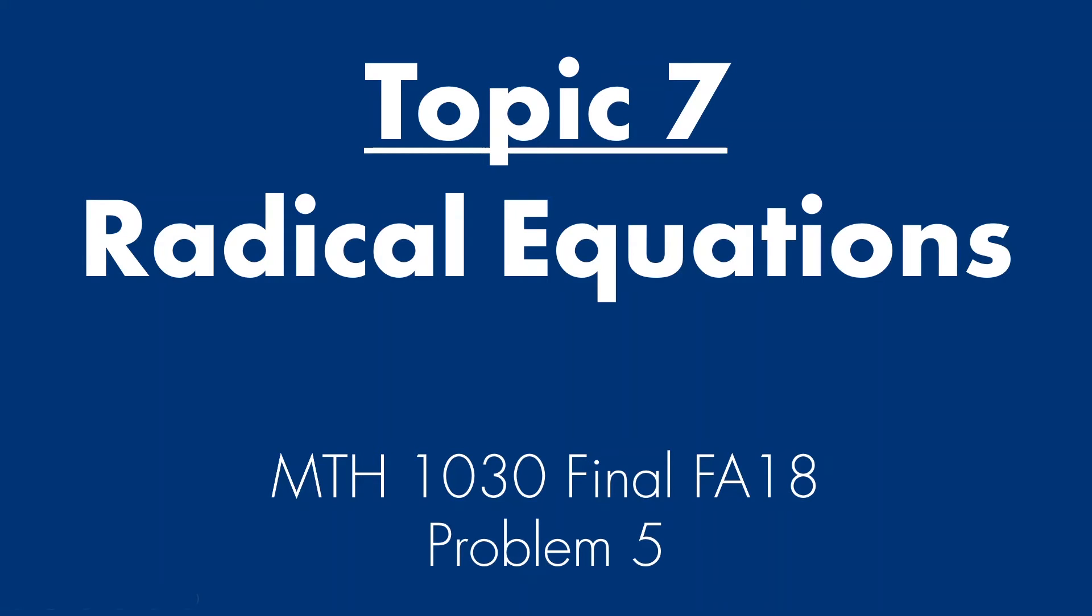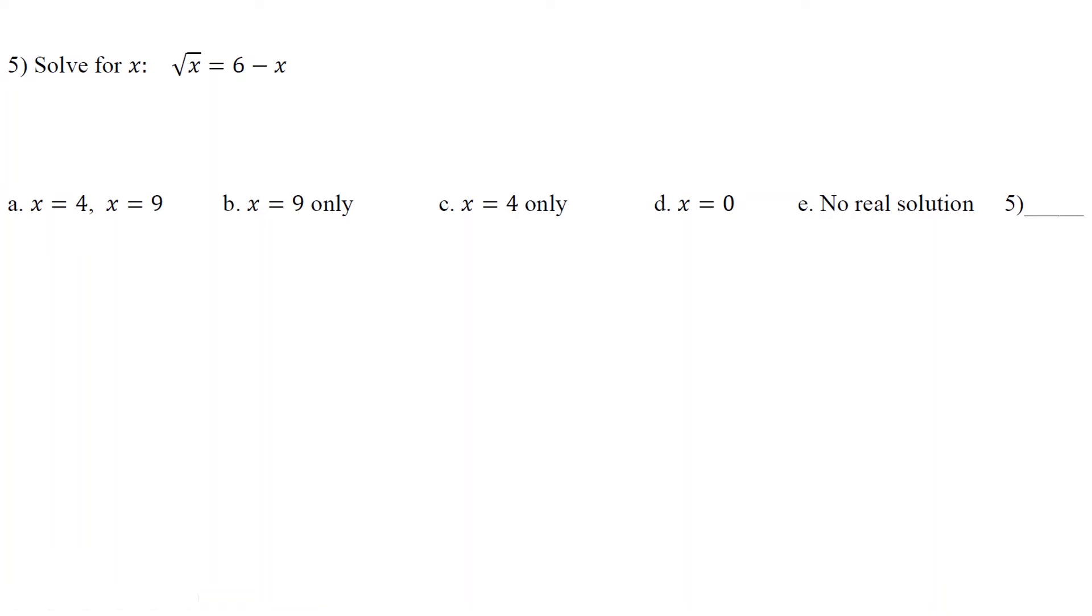We're going to look at problem 5 from the final FA18. We got root x equals 6 minus x. You have to square both sides immediately. So you get x equal 36 minus 12x plus x squared. Move everything to one side. x squared minus 12x plus 36 minus x equals 0. So if I just keep writing x squared minus 13x plus 36 equals 0. Now let me factor this out. x minus 9, x minus 4 equals 0. And I got x equal 9 or x equal 4. You must double check both answers.